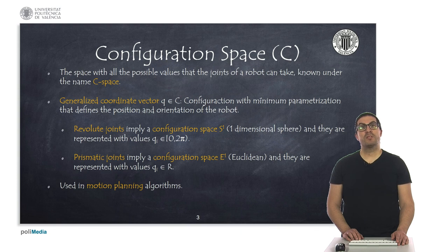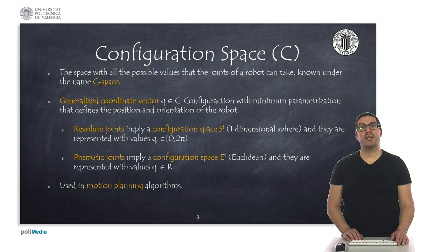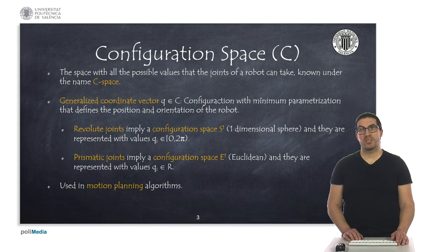The configuration space of a robot is the space with all possible configurations, that is, the values that joints can take. This space is also known as C-space and here we will refer to it with the letter C. The configuration of a robot represents the minimum parametrization that allows us to uniquely define the position and orientation of the robot. Therefore, we will usually use the letter Q as the generalized coordinate vector that belongs to C, the C-space.